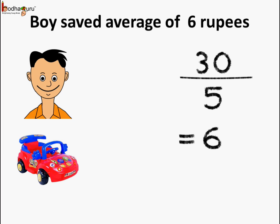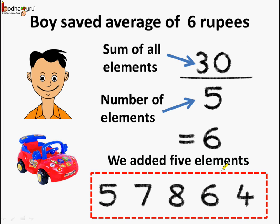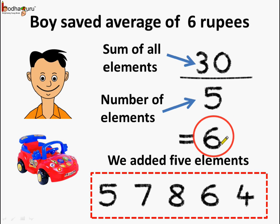So let's see how it was done. Average is the sum of all elements, where each element means the number of rupees saved per day, divided by the number of elements, which equals the number of days. We added 5 elements: 5 rupees on the first day, 7 rupees on the second day, 8 rupees on the third day, 6 rupees on the fourth day, and 4 rupees on the fifth day. The number of elements is 5, and the average we got is 6 rupees per day.